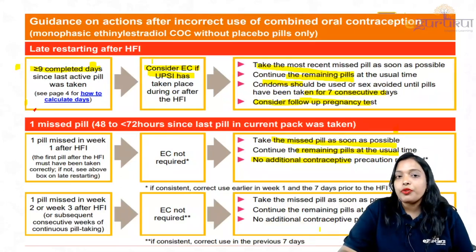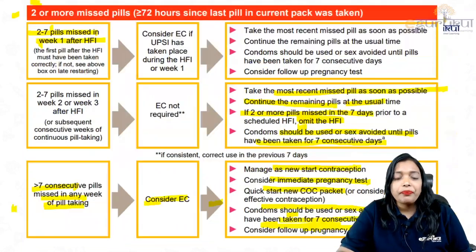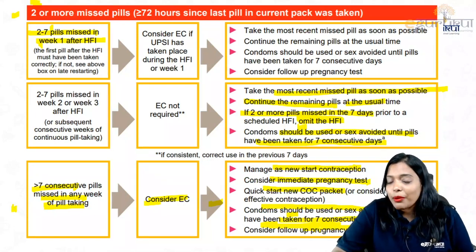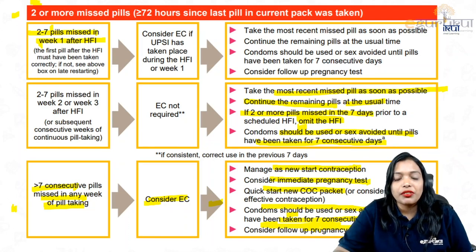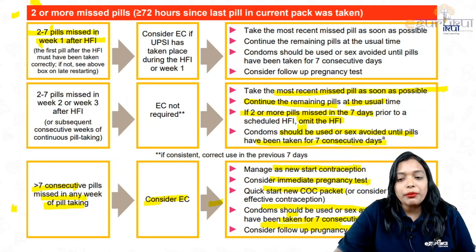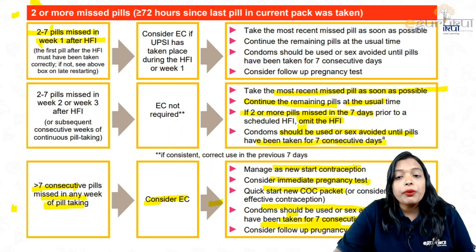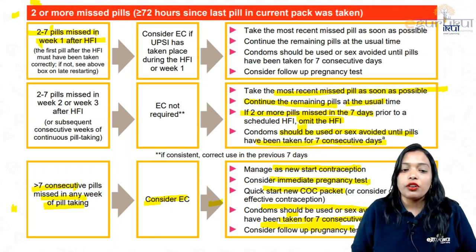Please go through the video once again if you're feeling confused. To recap: one pill missed — not to worry, take as soon as she remembers. Two to seven pills missed in the first week — consider emergency contraception if she had unprotected intercourse, take the most recent pill, continue remaining pills, use condoms for next seven days, and consider follow-up pregnancy test. Two to seven pills missed in week two or three — emergency contraception not required, take the most recent pill, continue remaining pills, omit the hormone-free interval if missed in the seven days prior to it, and use condoms for the next seven days.